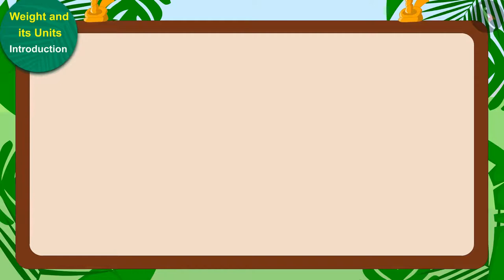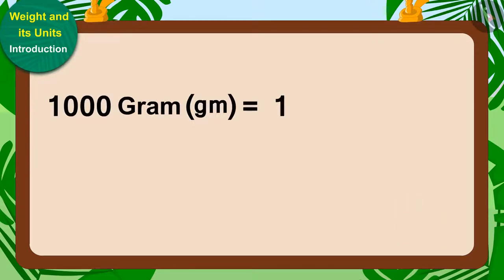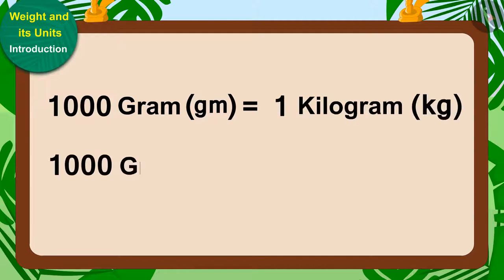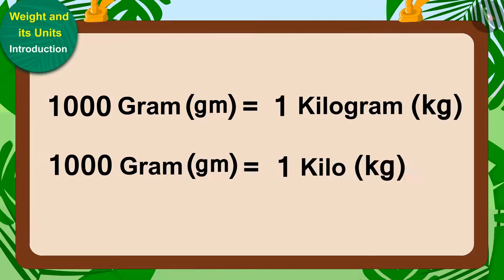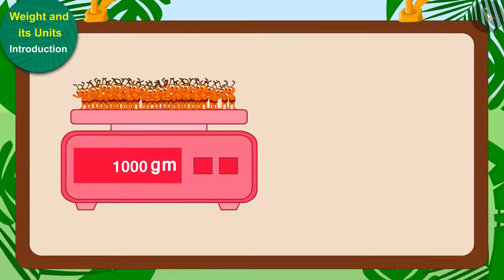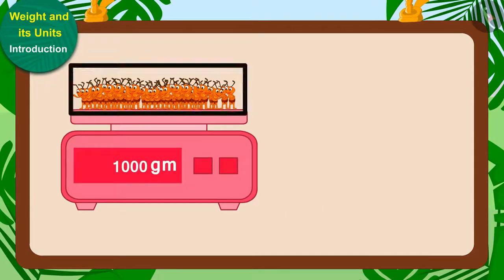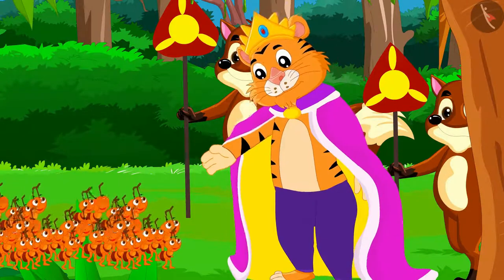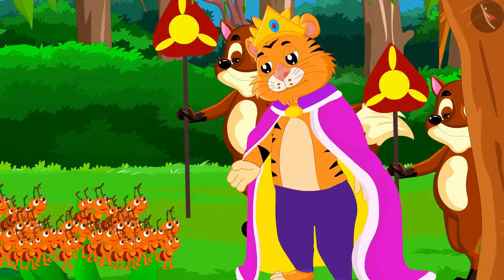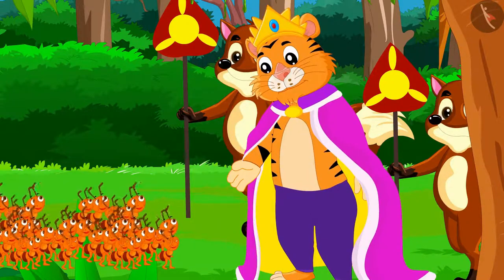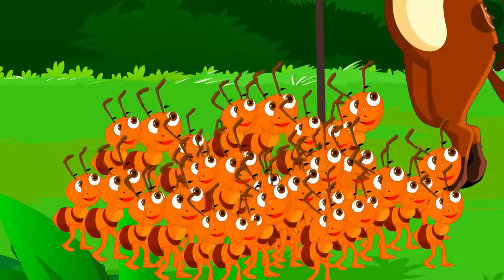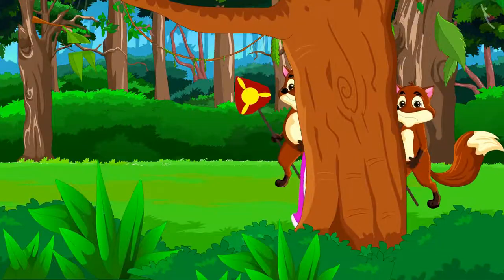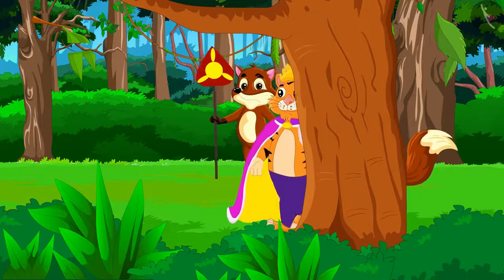And do you know another fun thing? 1,000 grams is equal to 1 kilogram or 1 kilo. This means 10,000 ants weigh 1 kilo. The king was very impressed by the unity and wit of the ants. He gave 10 kilograms of sugar to the ants and resumed his walk.